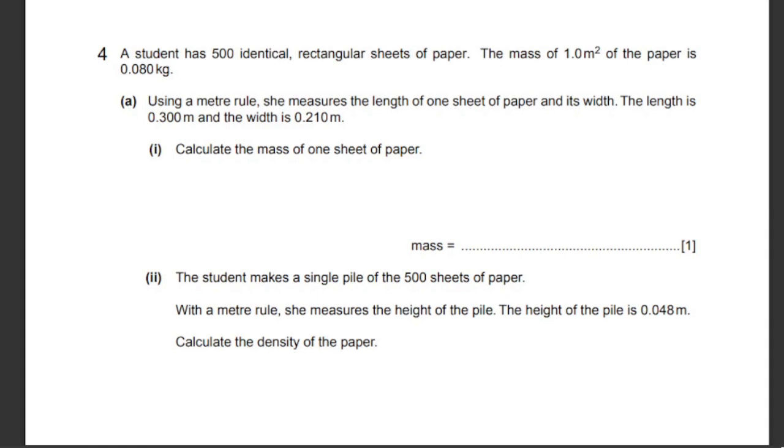Question number 4. A student has 500 identical rectangular sheets of paper. The mass of 1 meter cube of the paper is 0.08 kilograms.